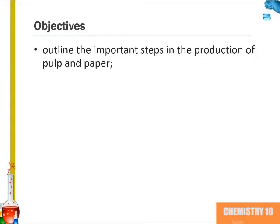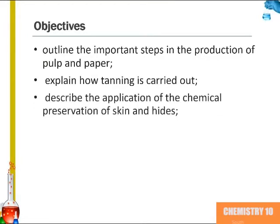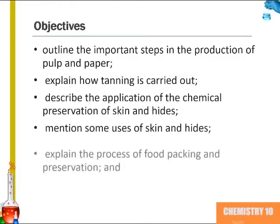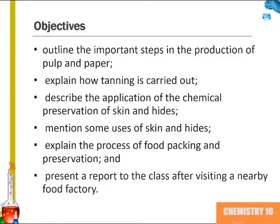Furthermore, you should be able to outline important steps in the production of pulp and paper, and explain how tanning is carried out while describing the application of chemical preservation of skins and hides and mention some uses of these skins and hides. You should also be able to explain the process of food packing and preservation and present a report to the class after visiting a nearby food factory.